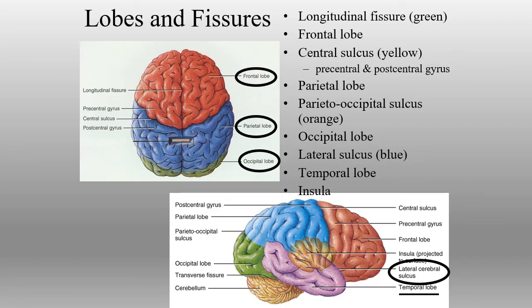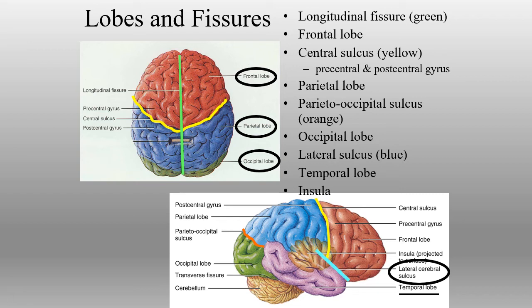We have the frontal lobe, parietal lobe, and occipital lobe. The two hemispheres are separated by the longitudinal fissure. The frontal and parietal lobes are separated by the central sulcus; the parietal and occipital lobes are separated by the parietal-occipital sulcus. On the side, we have the lateral sulcus between the temporal lobe and the parietal and frontal lobes. We also have the transverse fissure, which goes between the occipital lobe and the cerebellum.